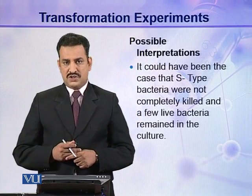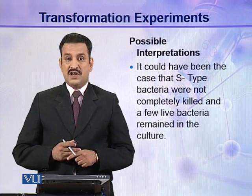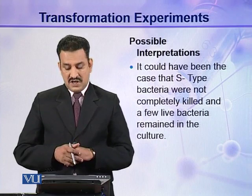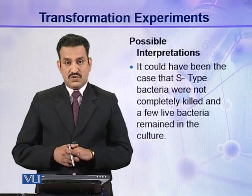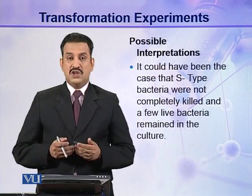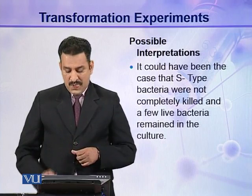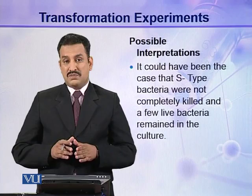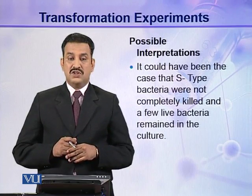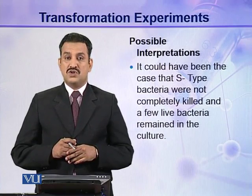Griffith considered possible interpretations of his results. The first possibility was that some S-type bacteria were not completely killed by heat, and a few remained alive in the culture. When injected, these live bacteria multiplied and caused pneumonia. However, he used control experiments with the same heat-killed S-type bacteria, and in those controls no mice ever died of pneumonia.